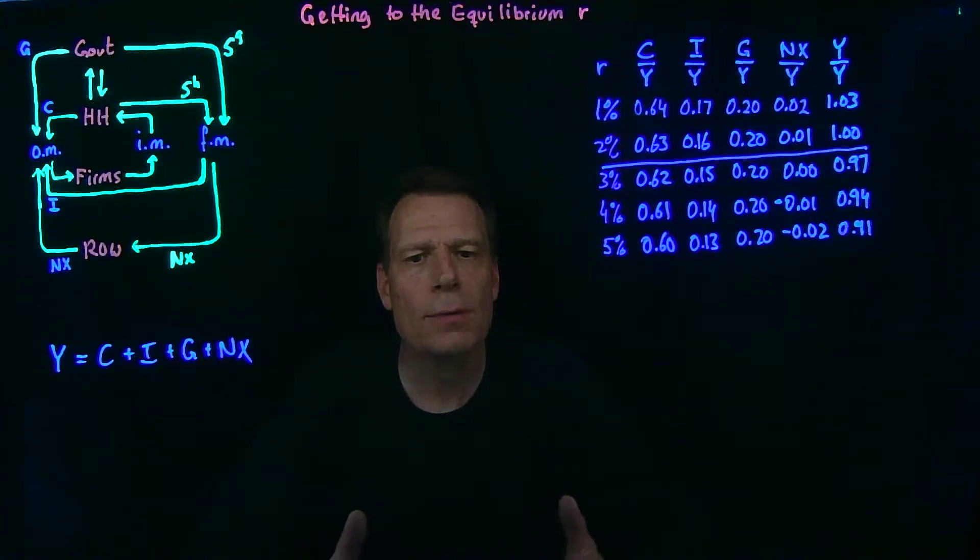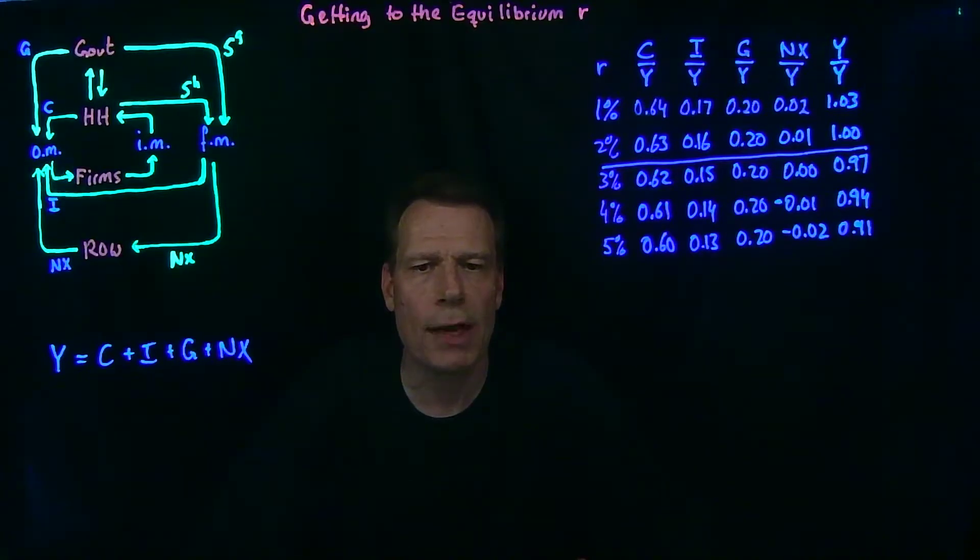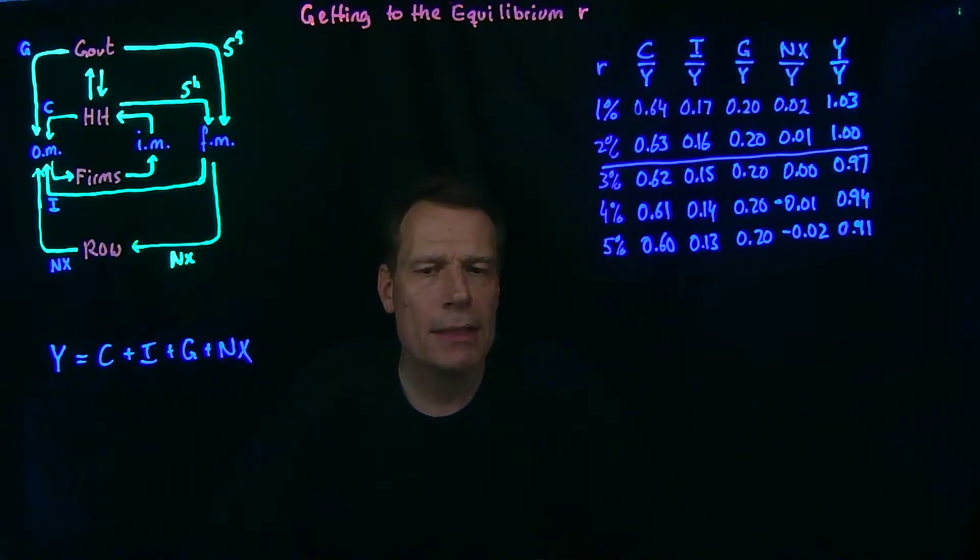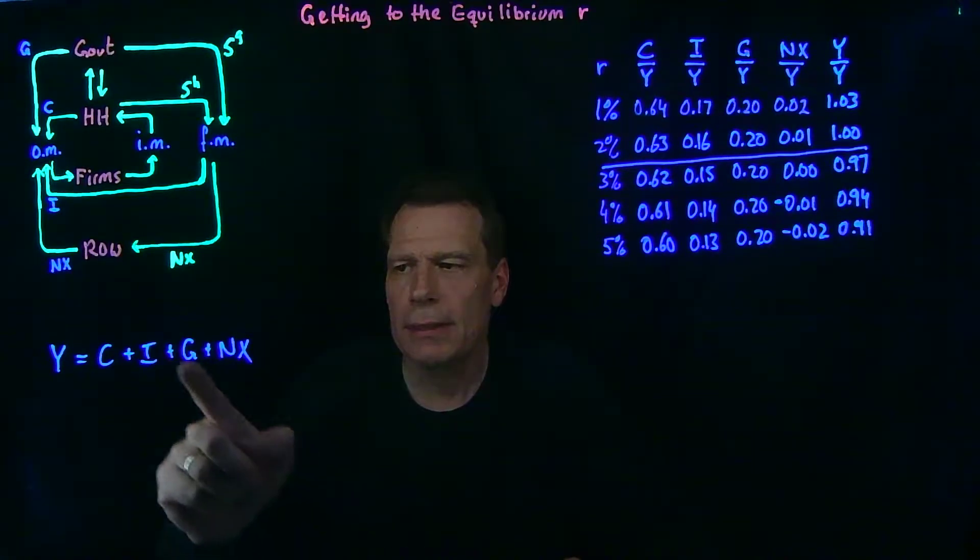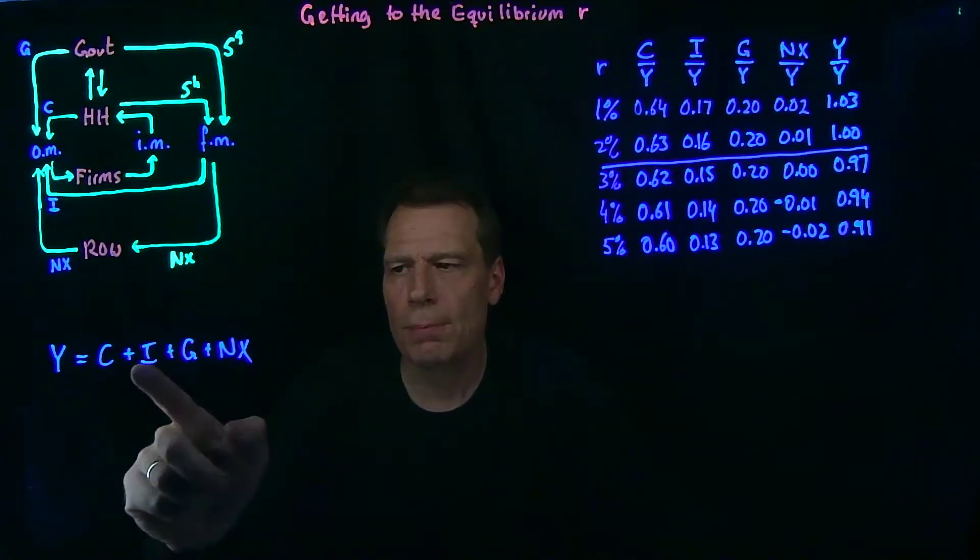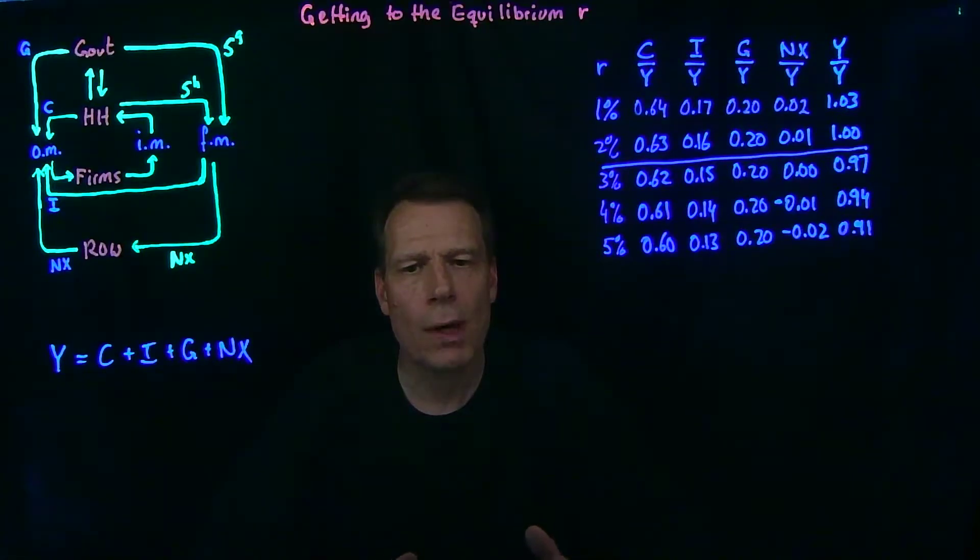We've now seen how we can use the equilibrium equation that emerges on the left-hand side of the circular flow diagram to find the equilibrium in this economy. By simply noting that in equilibrium this equation has to hold, and then dividing that equation by 1, we get that the shares of consumption, investment, government purchases and net exports must sum to 1 in equilibrium.